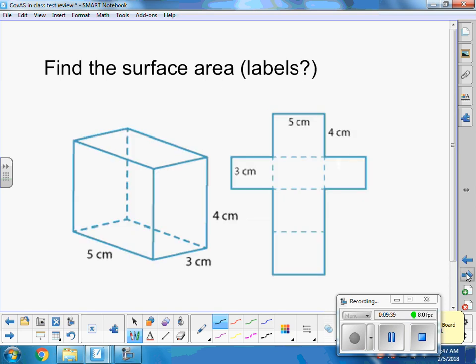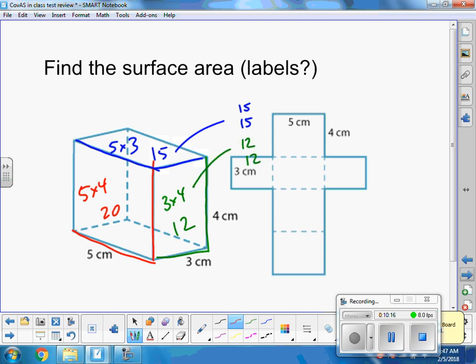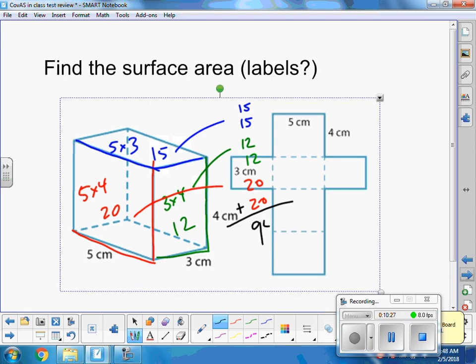Two more. This is 5 by 4, which is 20. We've got 3 by 4, which is 12. And then this is 5 by 3, which is 15. So I've got two 15s, two 12s, and two 20s. When I add all that up I end up with 94 centimeters squared.